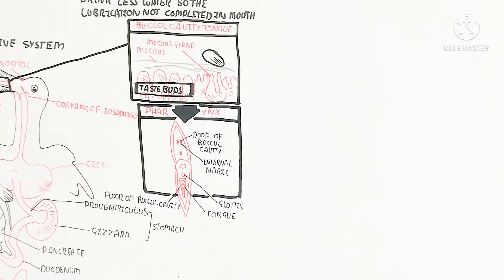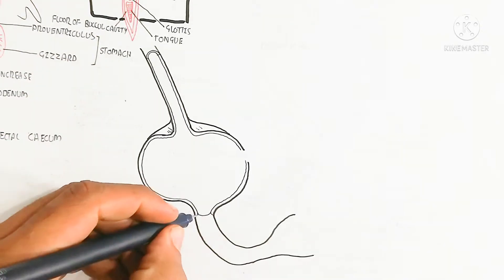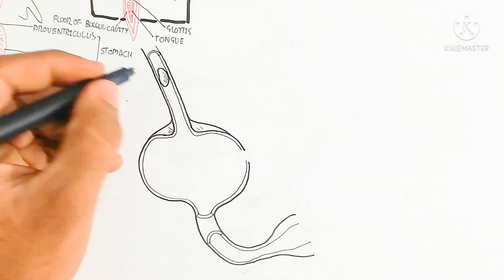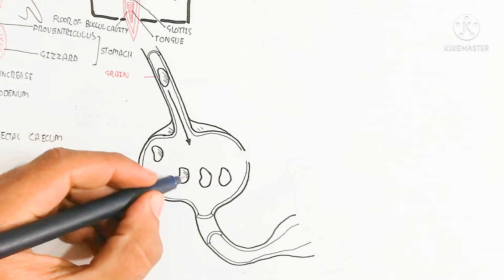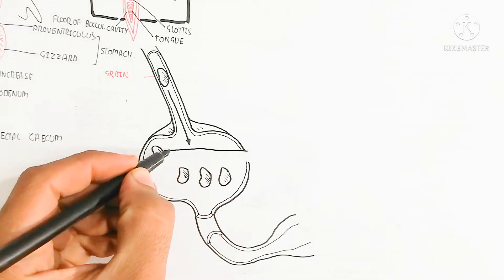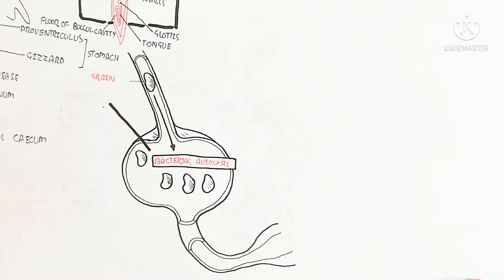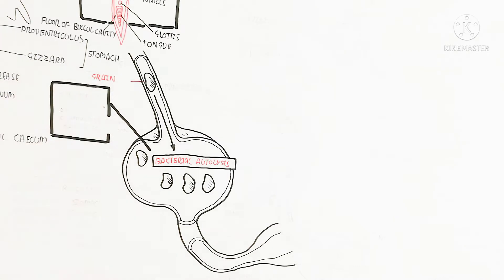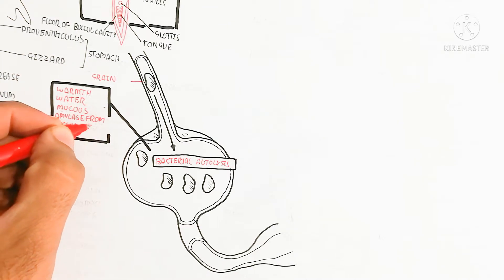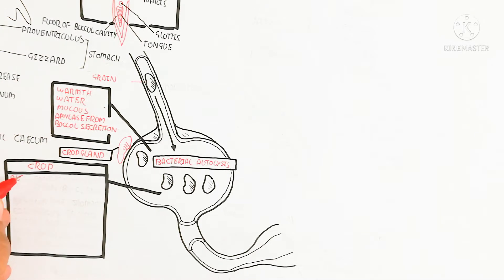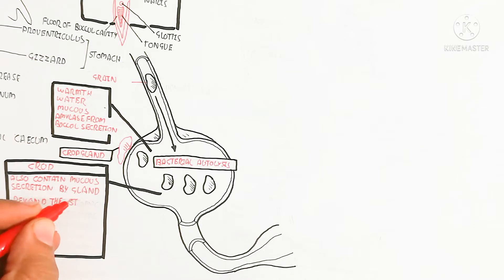Food travels from the esophagus into the crop, which is a bag-like storing structure. An important function of the crop is the production of pigeon milk, which is the sloughing of epithelial cells stimulated by the prolactin hormone during hatching. This pigeon milk feeds the young ones. Bacterial autolysis also occurs in the crop, increasing nutrient availability, along with warmth, water, mucus, and amylase from buccal secretions.